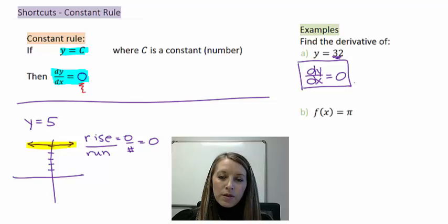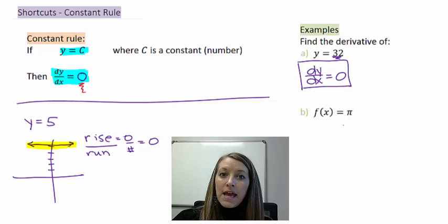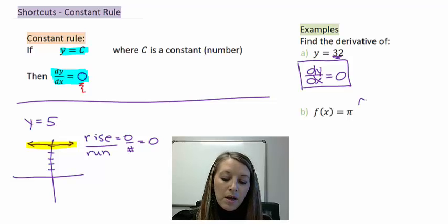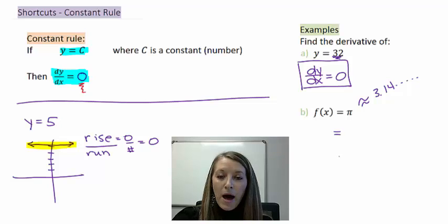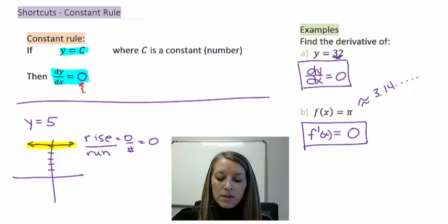In part B, here's one that always throws people for a loop. They see pi and they get kind of in freak out mode. No worries about that. Just note that pi is a number in itself. It's a very odd number, yes, but it is just a number. It is an approximation of 3.14, so on and so forth. So if I want to take the derivative of pi, I'm just taking the derivative of a constant or of a number. So the derivative of that is also just zero. And the notation that I'm going to use is f prime of x. So there is my derivative for part B.